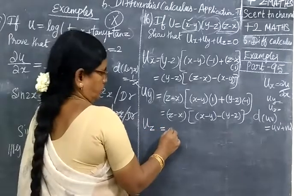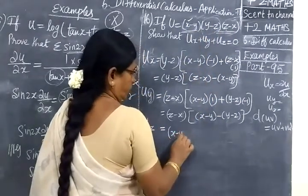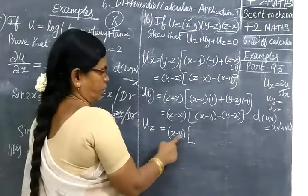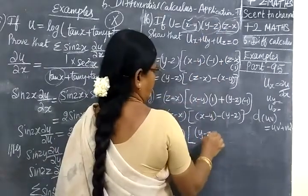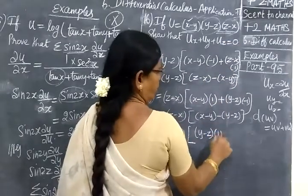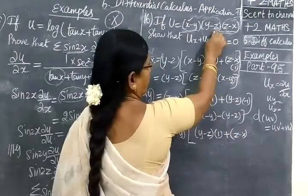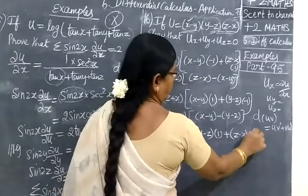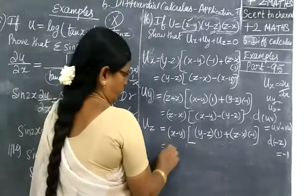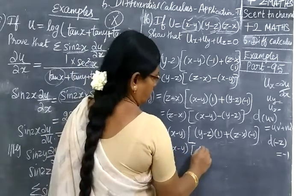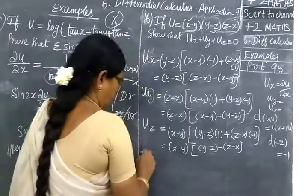So u_z equal to u_z, z and x minus y appear constant. x minus y constant, z alone we are differentiating. So xy, then y minus z write as usual, z minus x differentiate: z is 1, x is 0, plus z minus x write as it is, y minus z, z minus z is minus 1. So equal to x minus y then y minus z minus z minus z. Now we add all.